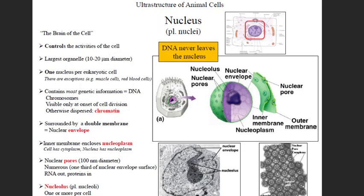The nucleus has an outer membrane and an inner membrane — the nuclear membrane. The small openings are the nuclear pores. The nucleolus is the region where DNA is present inside the cell, and through these nuclear pores molecules can move across the nucleus.